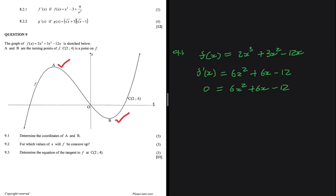We can take 6 as a common factor on the right-hand side, giving us 6(x² + x − 2). Dividing both sides by 6, we get 0 = x² + x − 2.